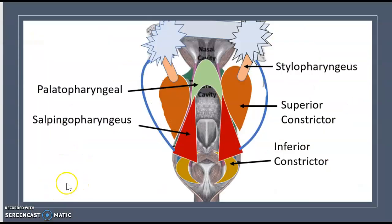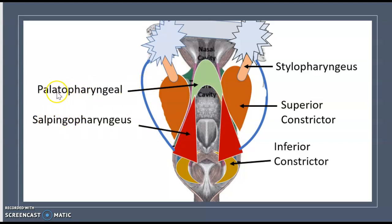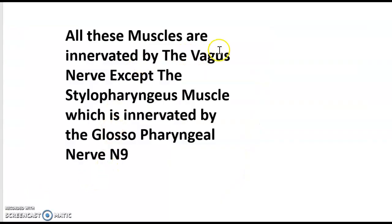Regarding the longitudinal muscles of the pharynx, there are three: the stylopharyngeus, the salpingopharyngeus, and the palatopharyngeus. All of these muscles are innervated by the vagus nerve, except the stylopharyngeus, which is innervated by the glossopharyngeal nerve, cranial nerve nine.